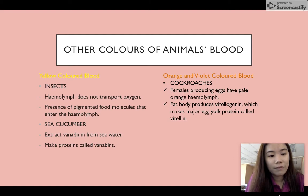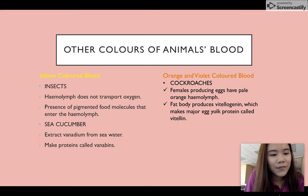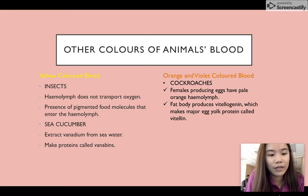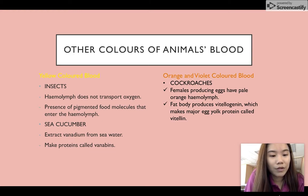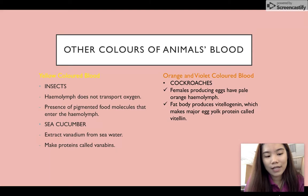Sea cucumbers extract vanadium from sea water and concentrate it in their bodies. The vanadium is used to make proteins called vanabin, which become yellow when oxygenated. Cockroaches have tracheae that transport oxygen and have no respiratory pigments in their hemolymph, so the liquid is usually colorless. Females producing eggs may have pale orange hemolymph because an organ called the fat body makes an orange protein called vitellogenin, which gives rise to a major egg yolk protein. Some marine invertebrates have hemerythrin as a respiratory pigment, which is colorless when deoxygenated and pink-violet when oxygenated.